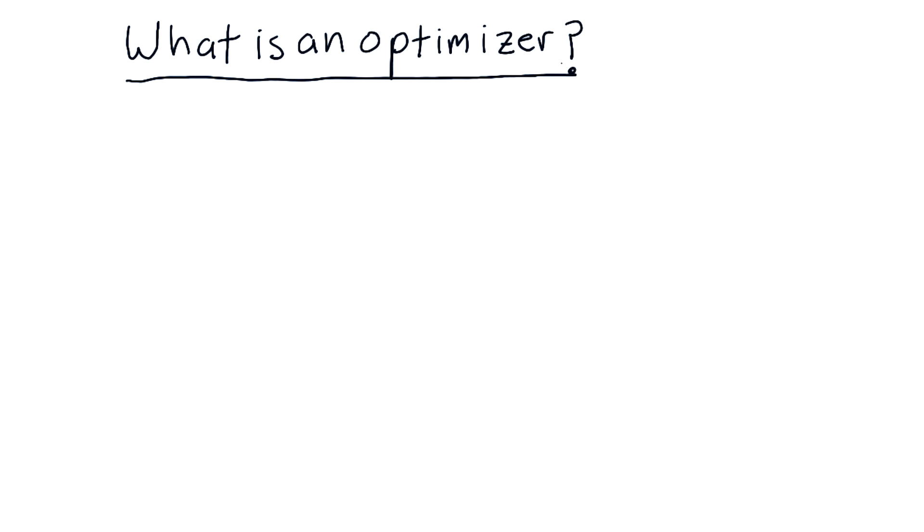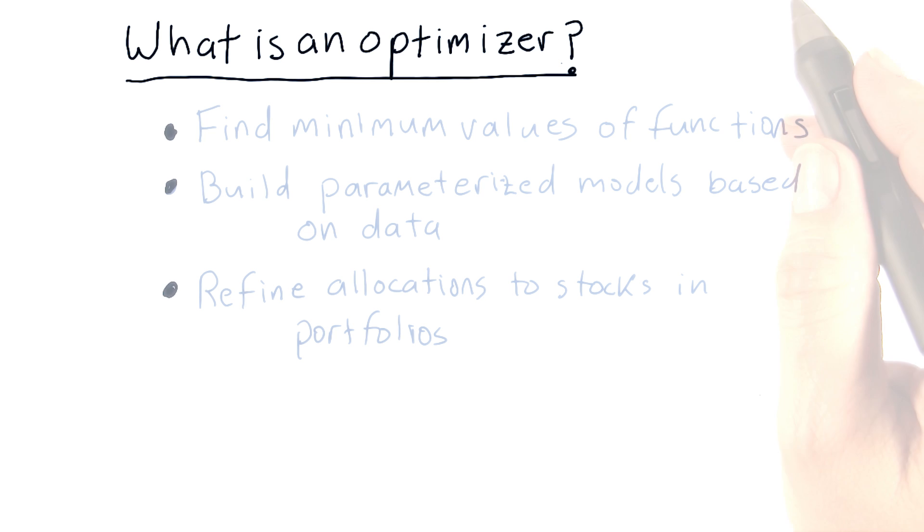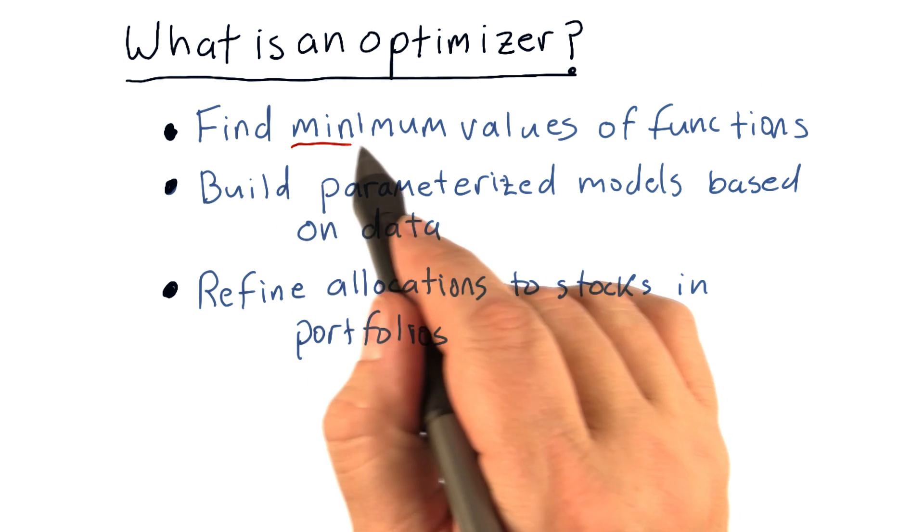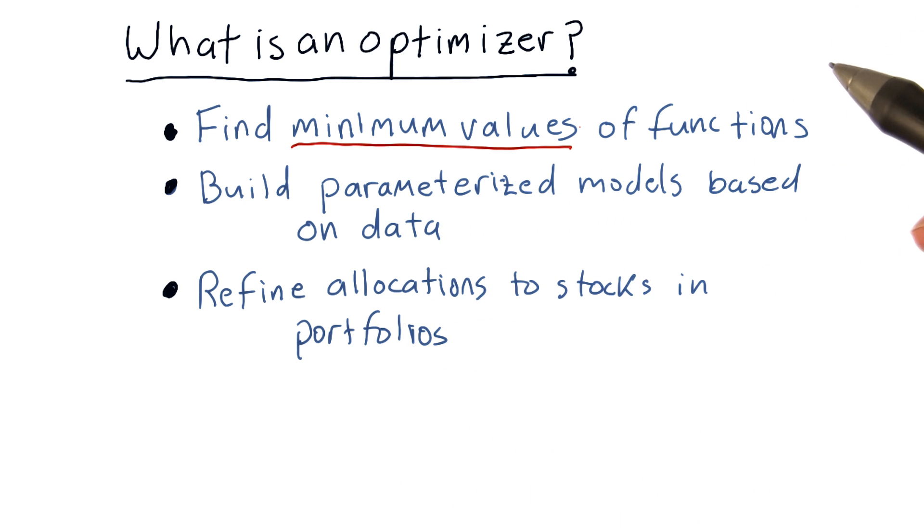What is an optimizer? An optimizer is an algorithm that can do the following things. Optimizers can be used to find minimum values for functions. Say you have a function like f(x) = x² + x³ + 5, or something like that. An optimizer can find for what value of x this overall function is minimized.